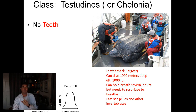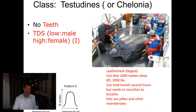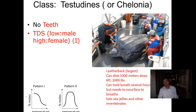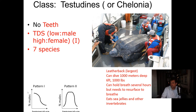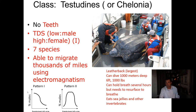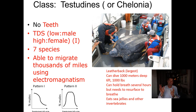Turtles have no teeth, but their bill can be quite sharp. Most of them have a temperature-dependent sex determination system. At low temperatures they tend to produce males, and at higher temperatures they tend to produce females — this is called a type one or pattern one temperature-dependent sex system. There are seven species, and most are highly endangered. They're able to migrate thousands of miles in open ocean without being able to see anything, but they can sense the magnetic field of the earth and determine which direction to move based on where they're at.